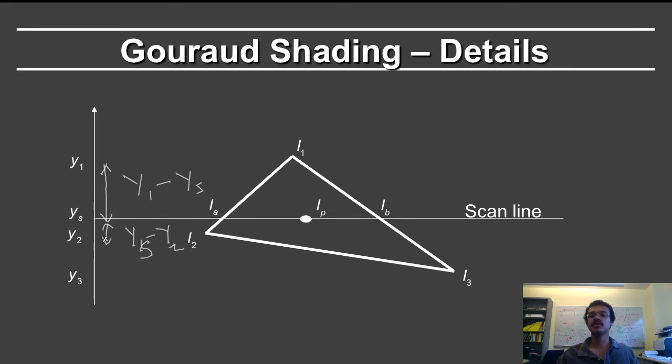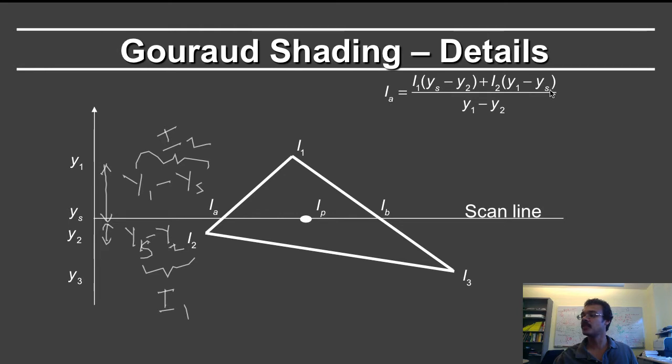Now it's just a question of doing the standard interpolation formula, which will mean that i1, because it's further away, it will be multiplied by the smaller quantity. So this will get i1, and this quantity will multiply i2. Indeed that's the formula here, i1 times ys minus y2, plus i2 times y1 minus ys. And divide the whole thing by the total length here, which is y1 minus y2. That's the formula for iA.